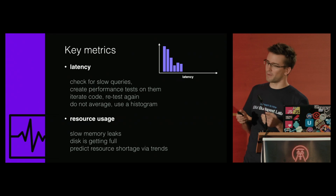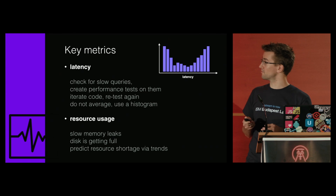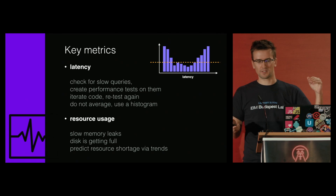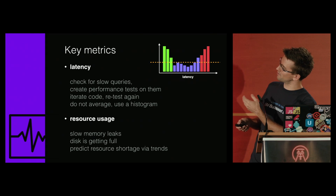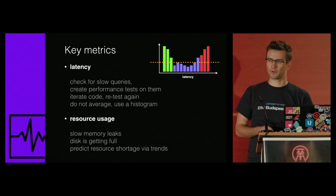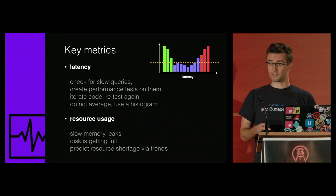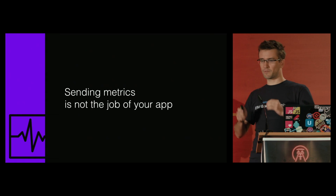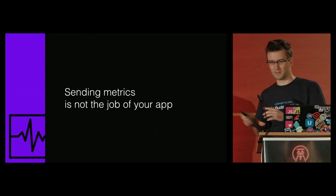If half of the metrics are super fast and the other half is really slow, on average everything seems fine, but you know it's not. If you use a histogram, you can differentiate, see which requests should be focused on and worked with. The other important metric is resource usage — their trends can predict when the resource will run short, so you can prepare for it. Remember: sending metrics is not the job of your application.